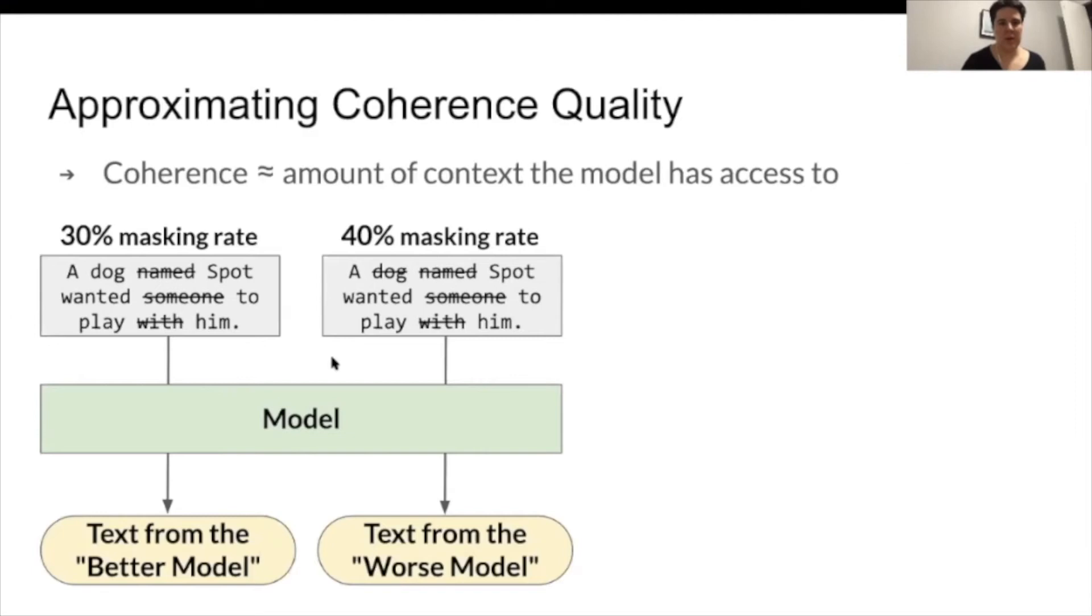So to be more specific, we have one single underlying text generation model, in our case, a fine-tuned version of GPT-2 on ROC stories, which are just five sentence common sense stories. And we're then going to provide exactly the same input to it twice, with just one difference.